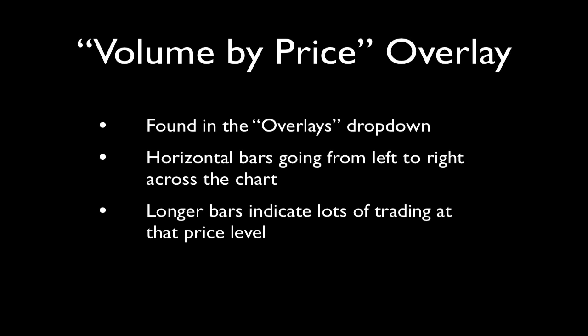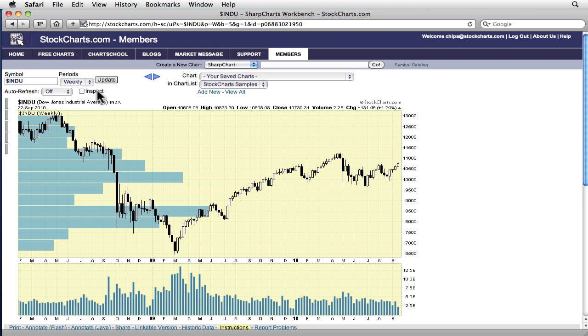This overlay creates a horizontal histogram on the left side of the chart that shows you the prices where volume is concentrated for that chart. If you see a long bar sticking out further to the right than the other bars, that's a good indication that lots of buying and selling has occurred in that price range, and therefore it probably contains a good support resistance level.